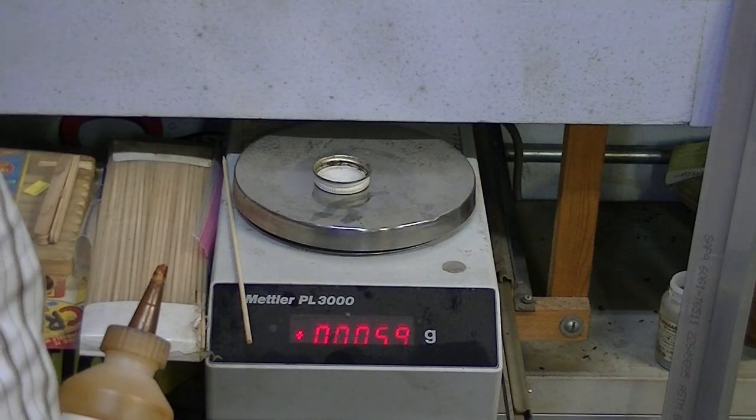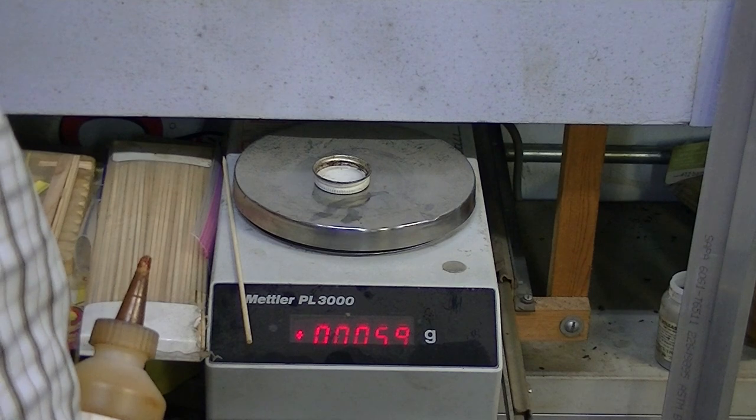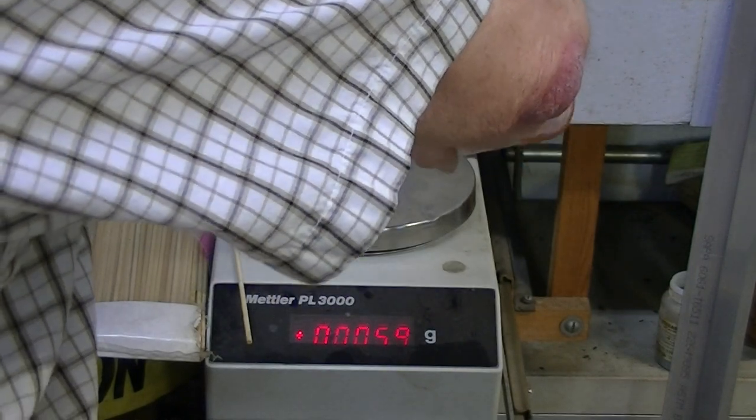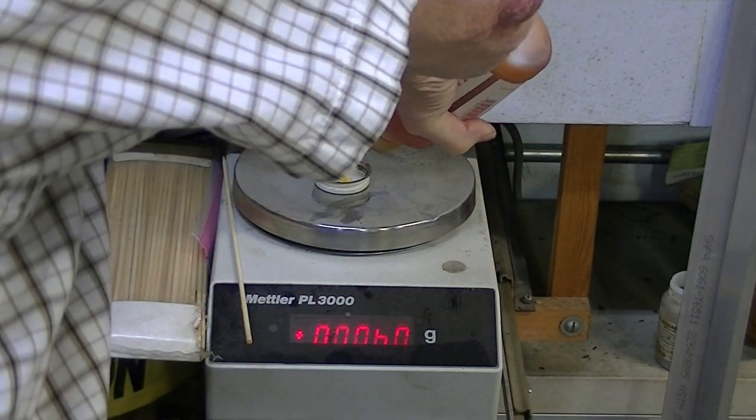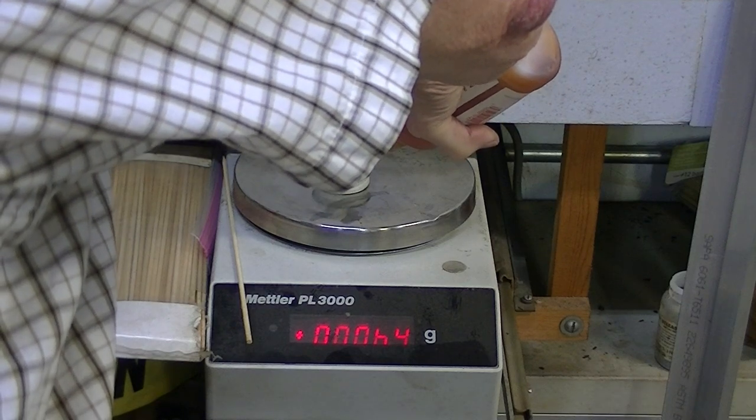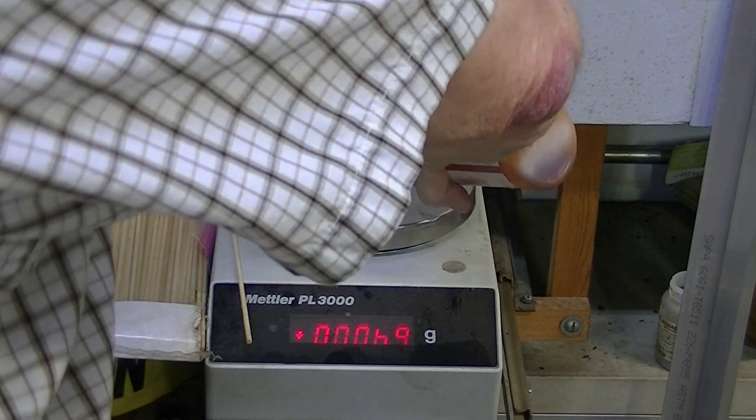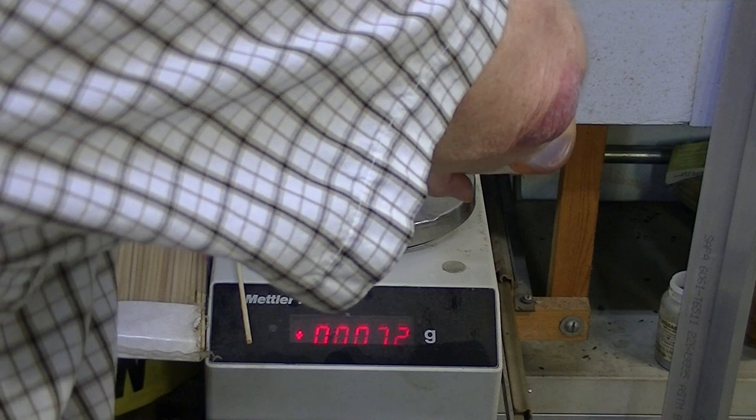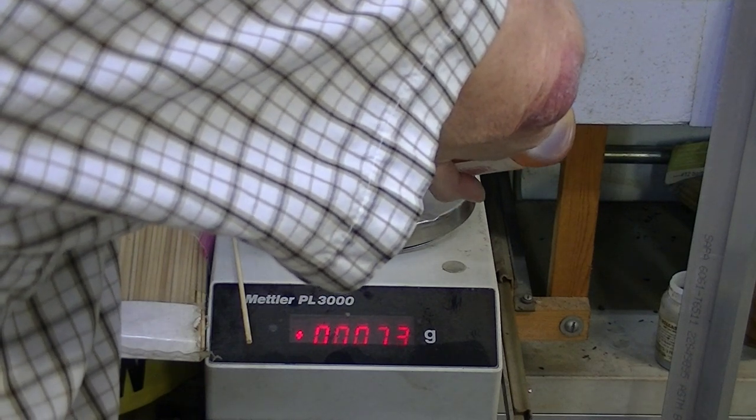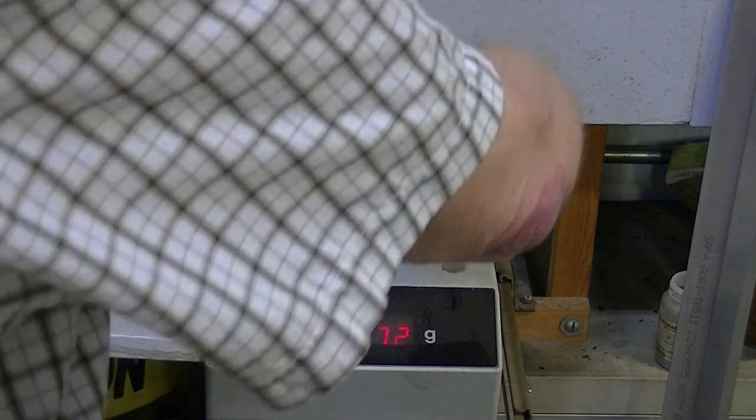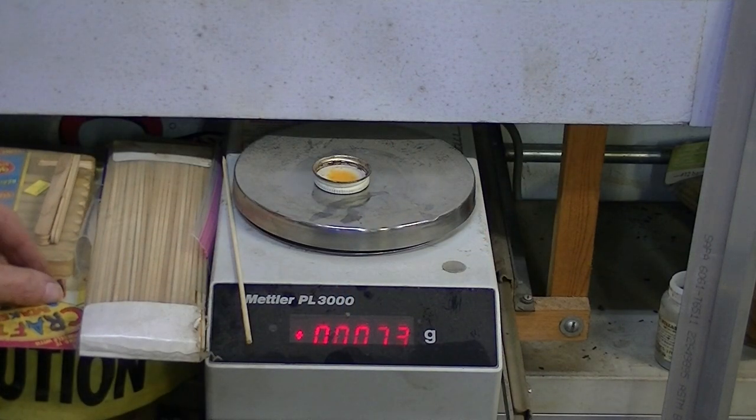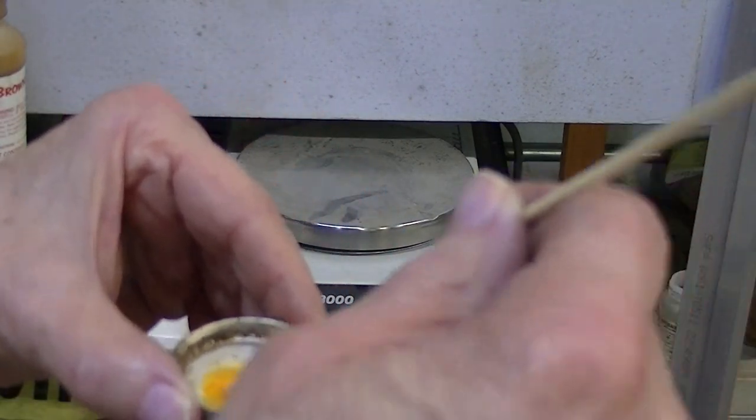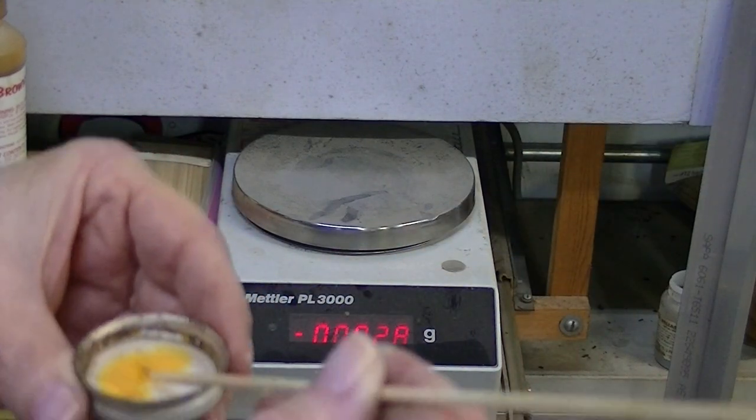I had enough hardener to bring it up to about 7.3 grams. Now I just have a pointed wooden stick and I'm going to mix until it's all one uniform color.